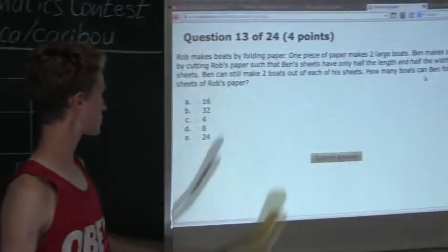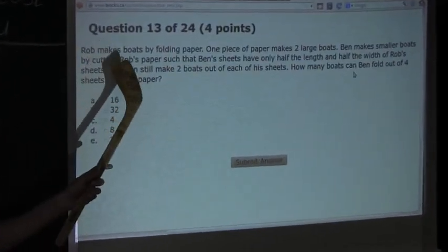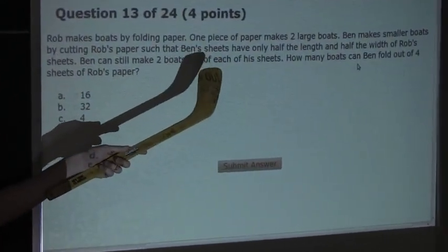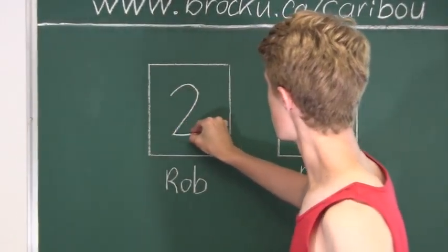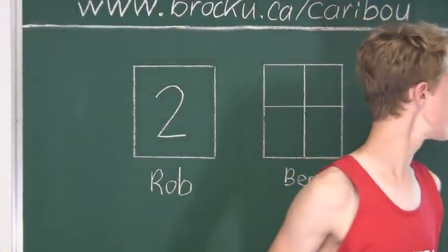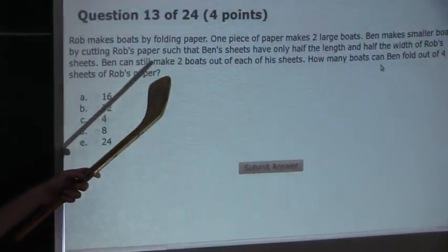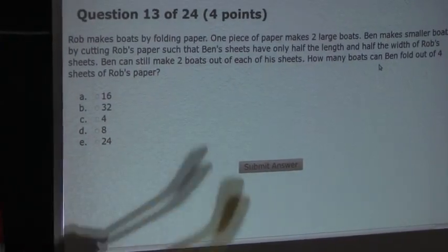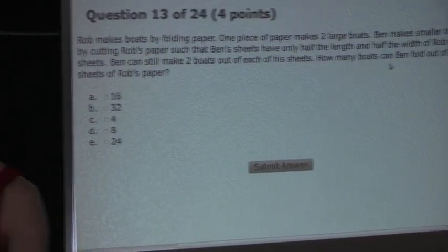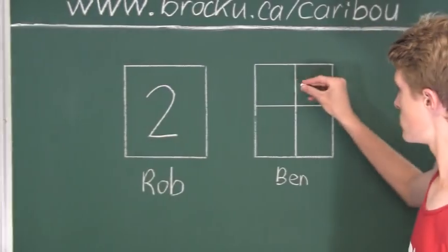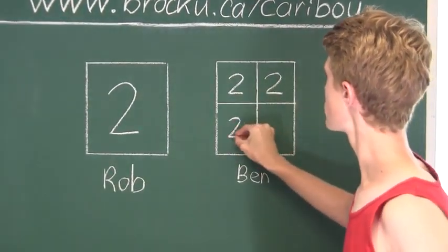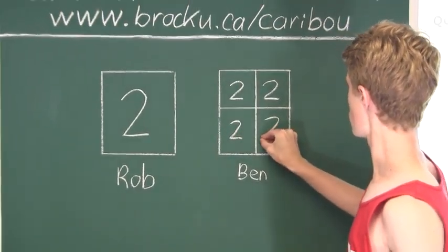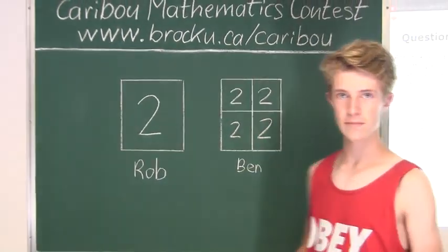Now let's see what else the question tells us. We can see that Rob makes on one piece of paper two large boats. What is also given to us is that Ben makes two boats out of each of his sheets. So he would make two boats out of this sheet, two boats out of this sheet, two boats out of this sheet, and two boats out of this sheet.